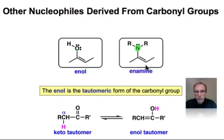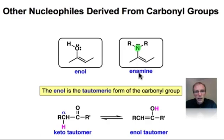The enamine structure is another nucleophilic form of a carbonyl derivative that we'll learn about in upcoming webcasts. The only thing I want you to pay attention to here is to see the close relationship between the enol and the enamine, recognizing that this is a neutral nucleophilic form derived from a carbonyl group.